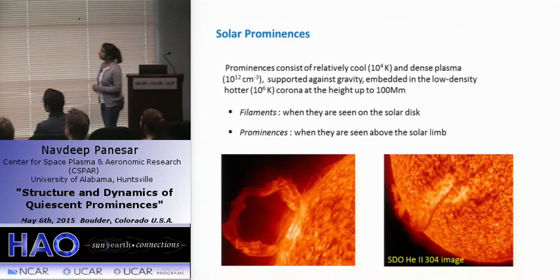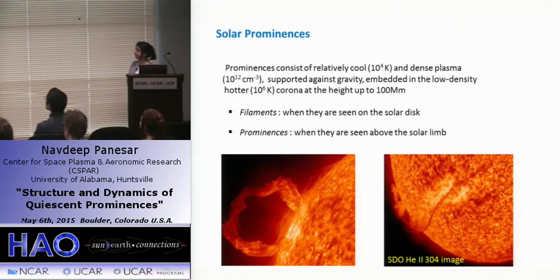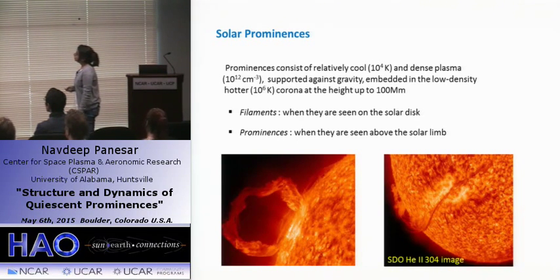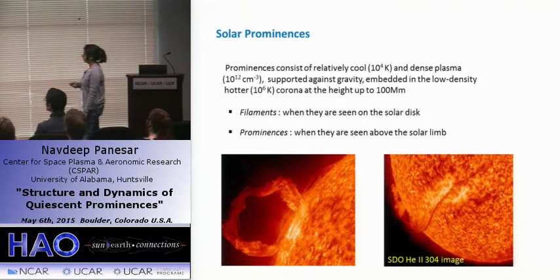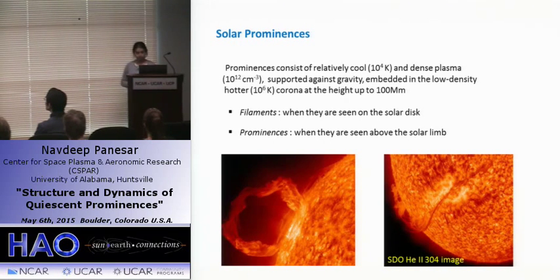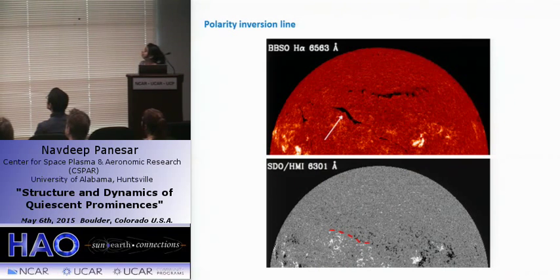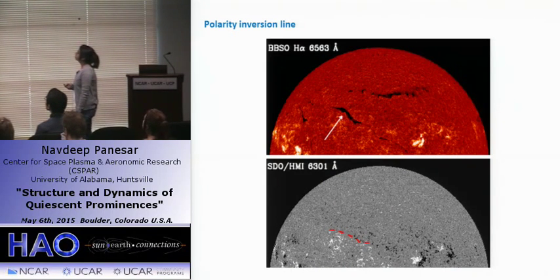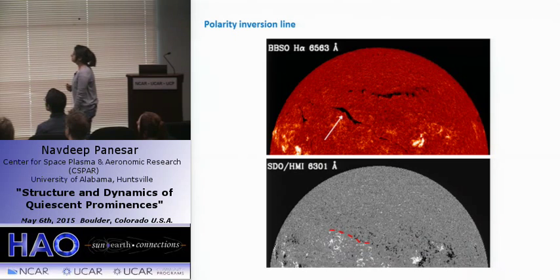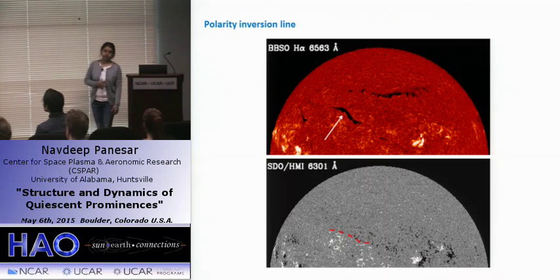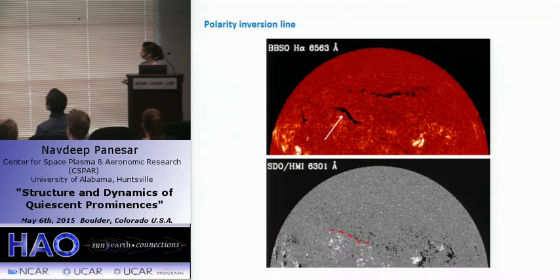What are solar prominences? Prominences mainly consist of relatively cool and dense plasma, which is supported against gravity and embedded in the lower-density hotter solar corona. They are known as prominences when seen above the solar limb, and called filaments when seen on the solar disk as a ribbon-like structure. These both have the same features, but their different names depend on their observed properties. Prominences usually lie along the polarity inversion lines, which separate regions of two opposite polarities.